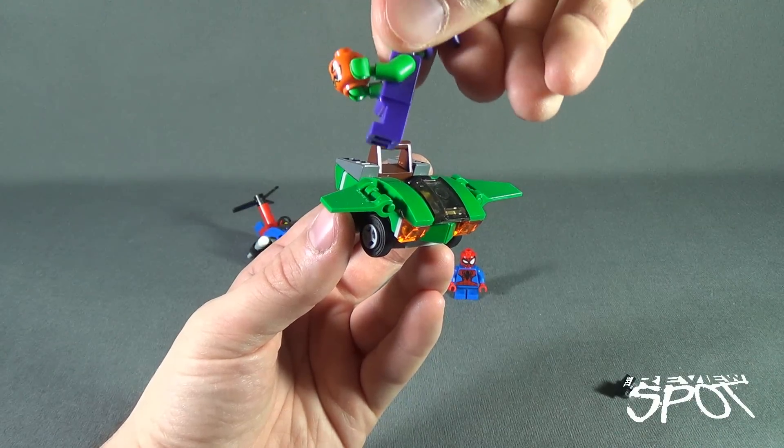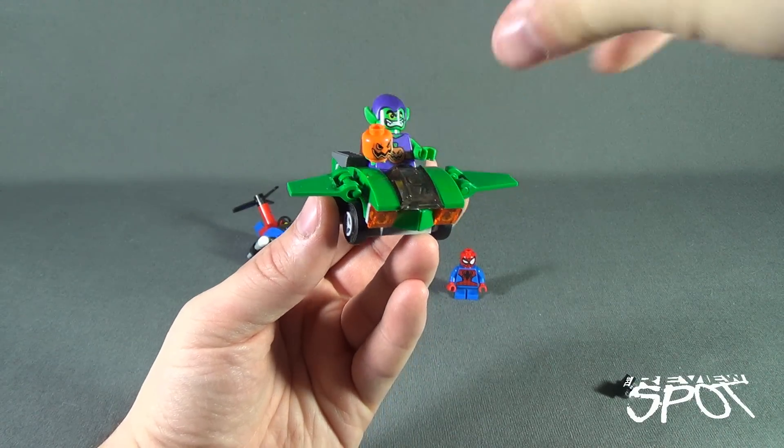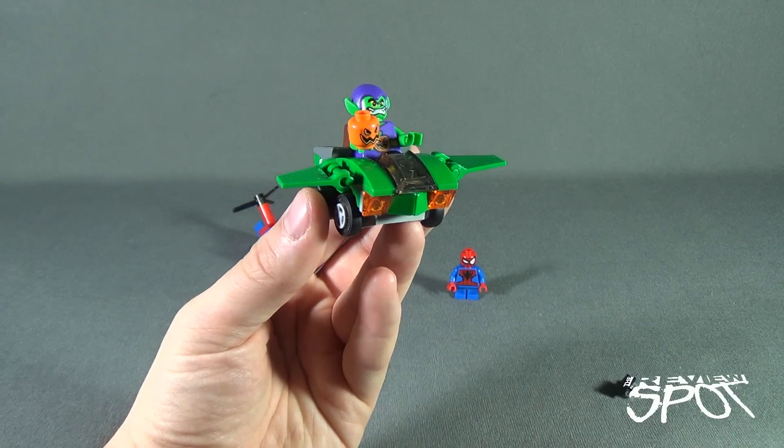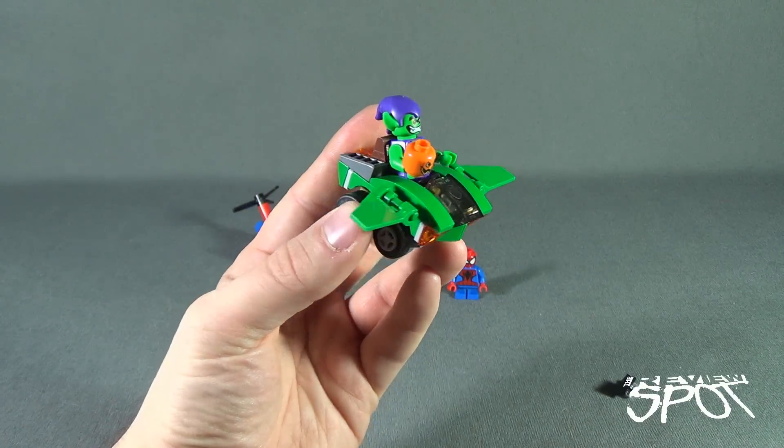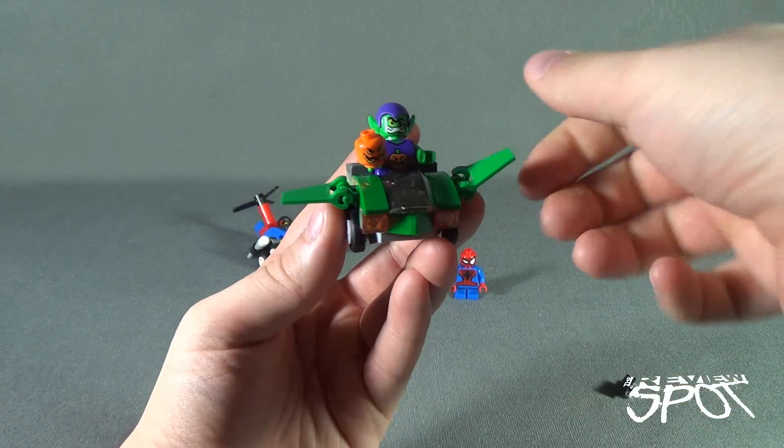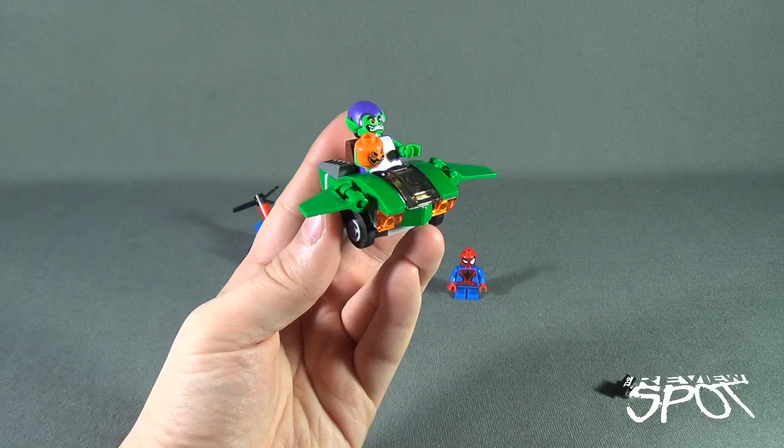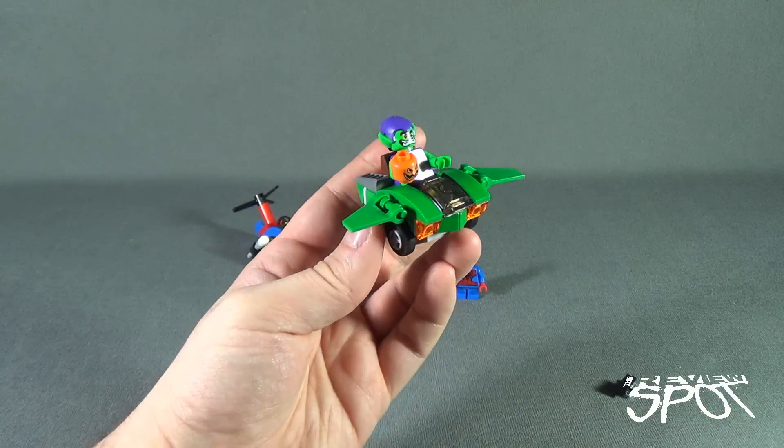There's still enough room and clearance for the Green Goblin to hold his pumpkin bomb as well, and I guess you can move these if you so wish as well. So there's the pumpkin glider. It doesn't really have a name necessarily.